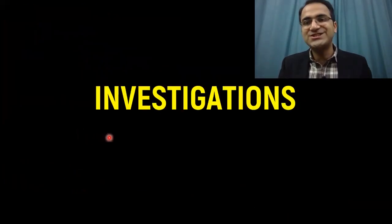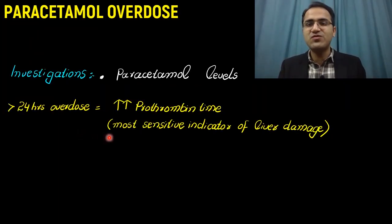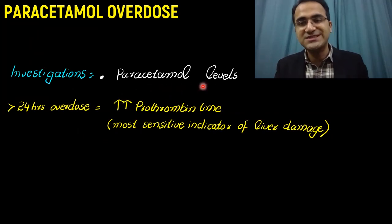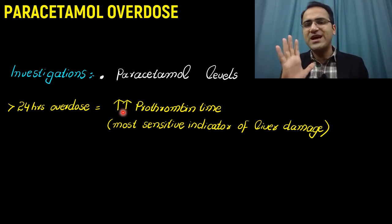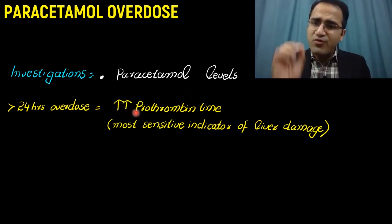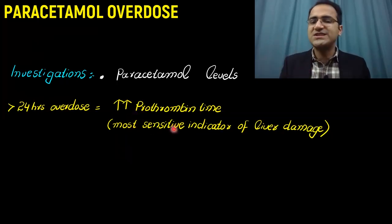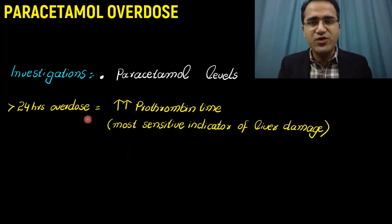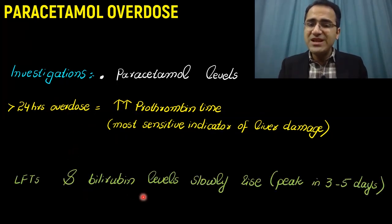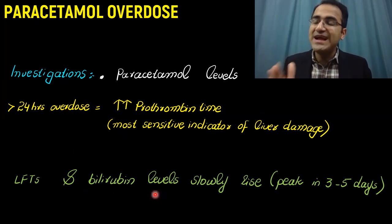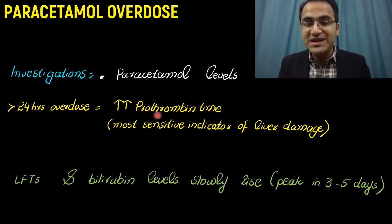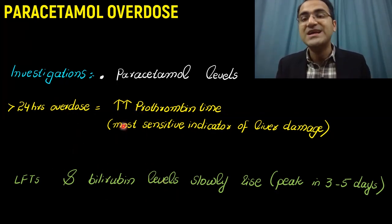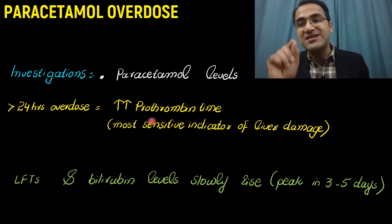Regarding investigations for paracetamol overdose: the most important investigation is paracetamol levels to confirm the diagnosis. The most sensitive indicator of liver damage in paracetamol poisoning is prothrombin time, which is seen to change after 24 hours. LFTs and bilirubin levels rise but slowly, peaking around the third to fifth day. So the first thing to change is prothrombin time, not LFTs or bilirubin — elevated prothrombin time indicates liver necrosis.